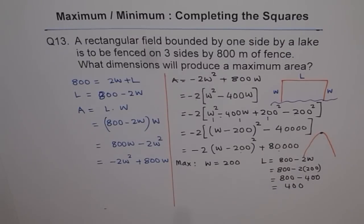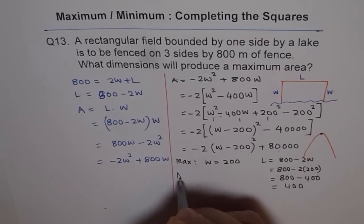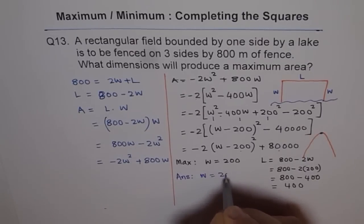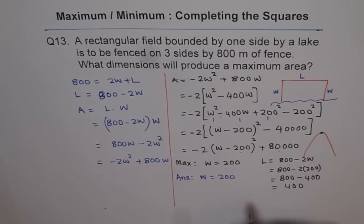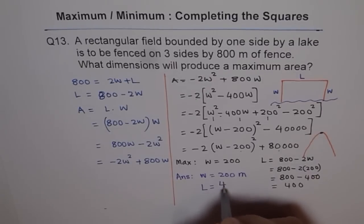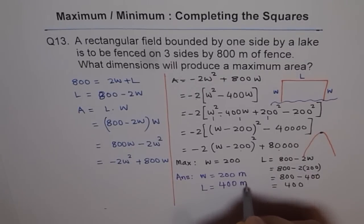And now we are in a good position to write down the answer. So we say our answer is width equals to 200. Don't forget to write units, meters. And length equals to 400 meters.